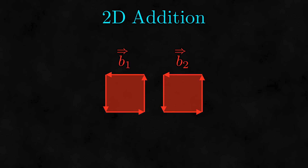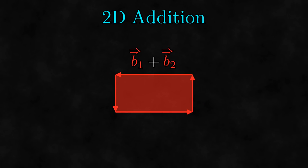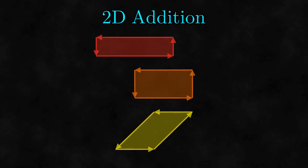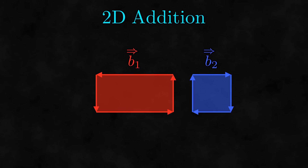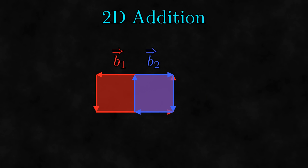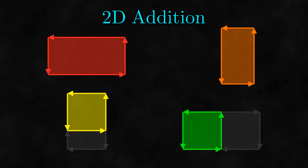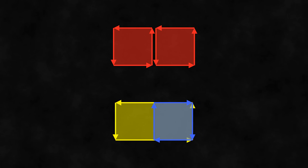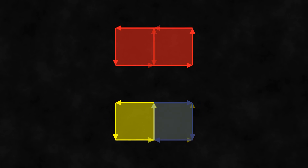The next bivector operation I want to look at is addition. Adding bivectors can actually get pretty complicated, but it's much simpler in two dimensions. If we have two bivectors with the same orientation, we can define addition to simply be adding the magnitudes, which can conveniently be done geometrically by just sticking the bivectors together. For bivectors with opposite orientations, it makes sense to subtract the magnitudes, which can be done geometrically by putting one bivector over the other and removing any spots that overlap. Notice that when lining up two bivectors to add them, the adjacent sides are pointing in opposite directions — keep this in mind for 3D addition.